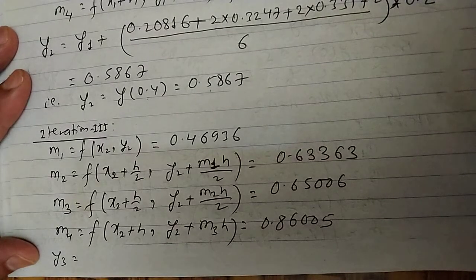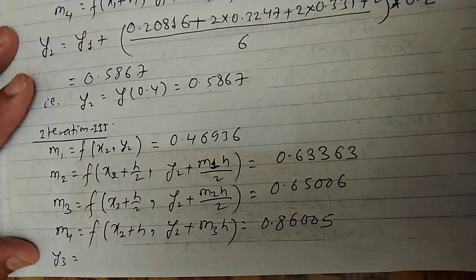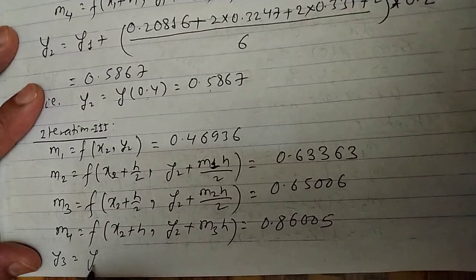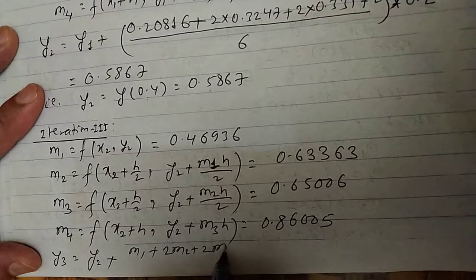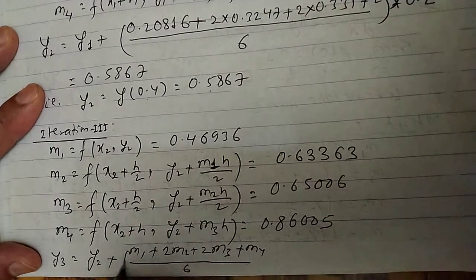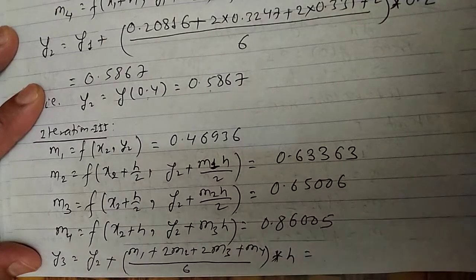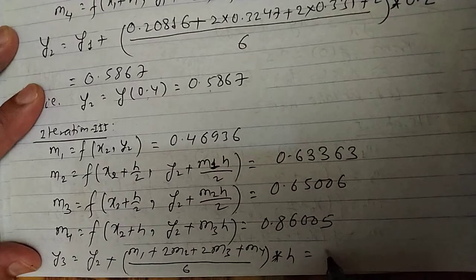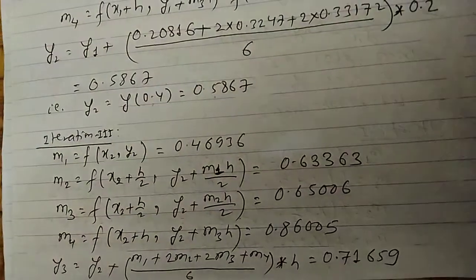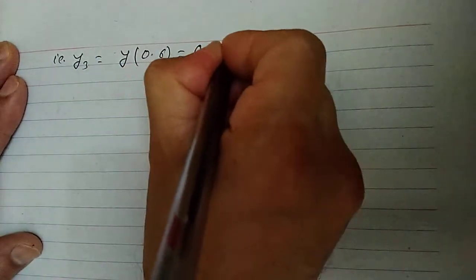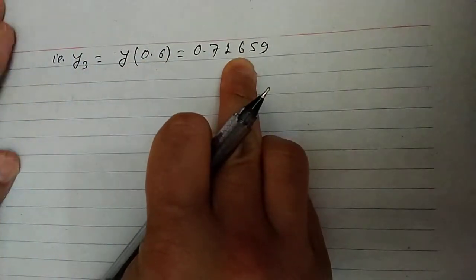y3 = y2 + (m1 + 2·m2 + 2·m3 + m4)/6 × h. With all values known, y3 = 0.71659. So y at 0.6 equals 0.71659. We now start iteration 4 with x3 = 0.6 and y3 = 0.71659.